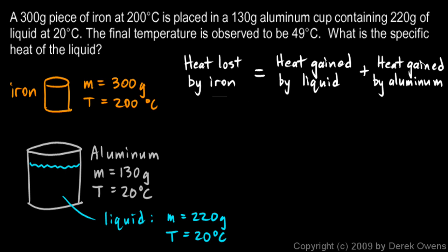Mathematically, I would say it like this. The heat lost by the iron is MC delta T, and that's for the iron, so we're talking about the mass of the iron, the specific heat of the iron, and the change in temperature, all of the iron. This equals MC delta T for the liquid, plus MC delta T for the aluminum.